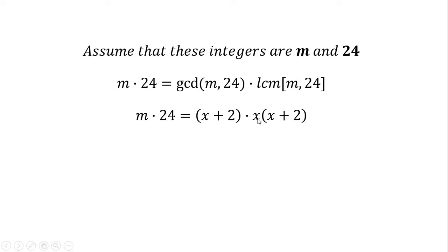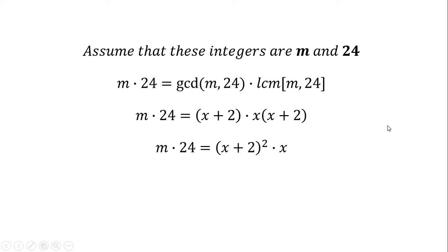The GCD is given as x plus 2 and the LCM is x times (x plus 2), so the expression becomes M times 24 equals (x plus 2) times x times (x plus 2). Let's rewrite this: M times 24 equals (x plus 2) squared times x, because we have two factors of (x plus 2). Dividing both sides by 24, M equals (x plus 2) squared times x, divided by 24.